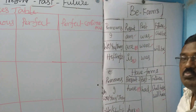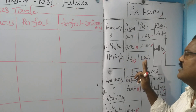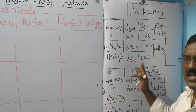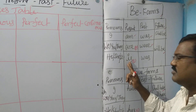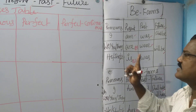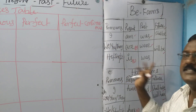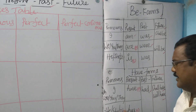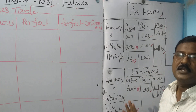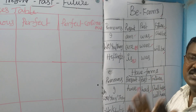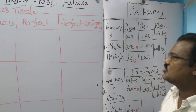In simple present tense, after singular subjects we have to write singular verb — which is the verb ending with 'S'. For example: he eats, she eats, it eats, she drinks, he drinks, it drinks. So singular verb means the verb which ends with 'S' — keep in your mind, my dear students.